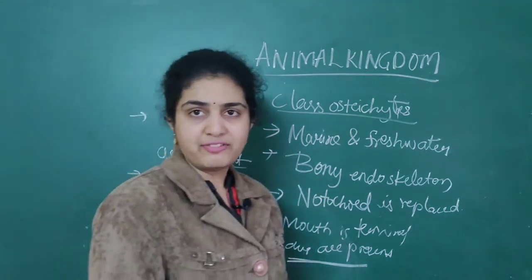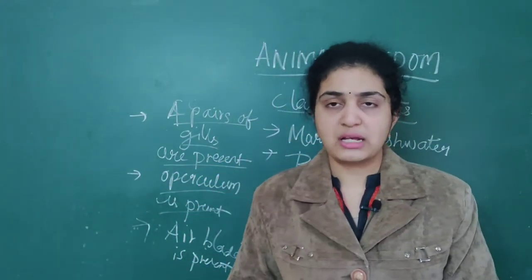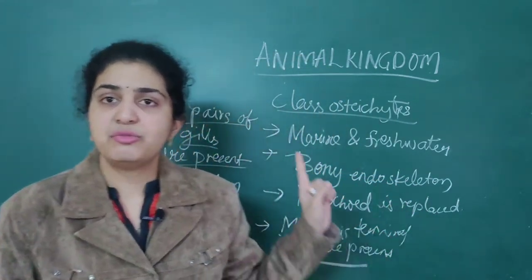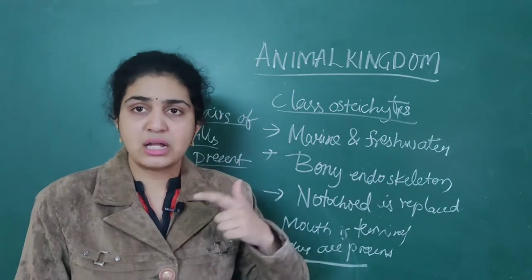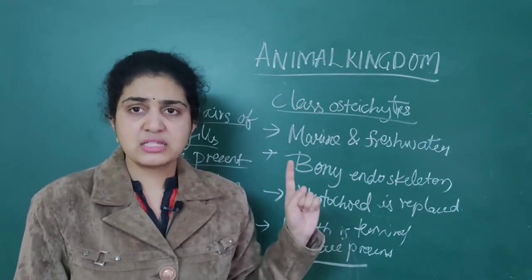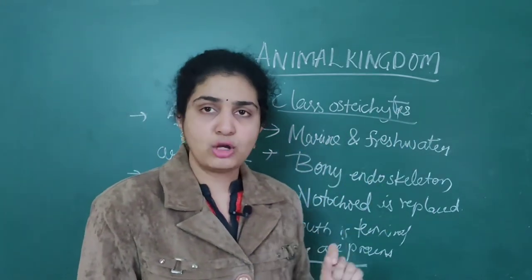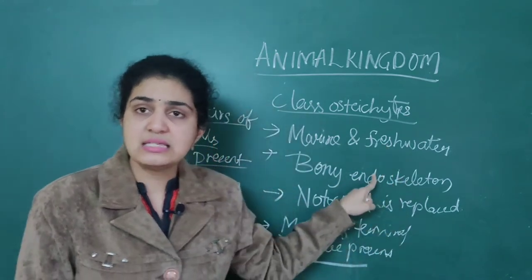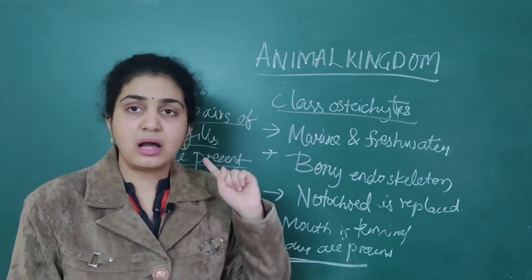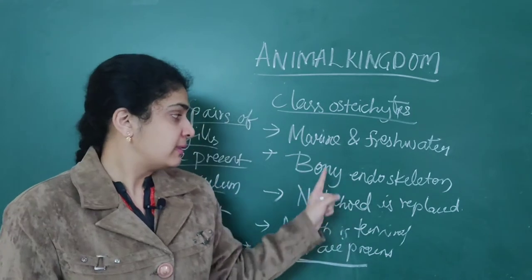So to summarize what we have discussed: Osteichthyes are marine and freshwater organisms. Reading as differences from Chondrichthyes: Chondrichthyes are marine only, Osteichthyes are marine and freshwater. Chondrichthyes have cartilaginous endoskeleton, Osteichthyes have bony endoskeleton. Regarding notochord: it persists throughout life in Chondrichthyes, but in Osteichthyes it is replaced — present only during embryonic development and later replaced by bony endoskeleton.